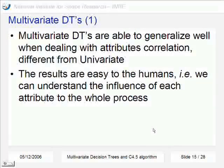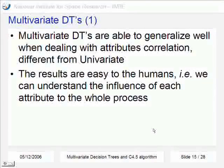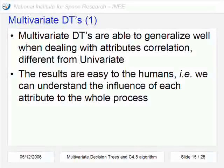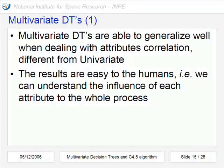Now we're going to talk about multivariate decision trees, because they are able to generalize well when dealing with attributes correlation. That is not the case of the univariate approach. The univariate approach was the case of C4.5 algorithm. And also in the univariate approach, the results are easy for humans. We can understand the influence of each attribute to the whole process.